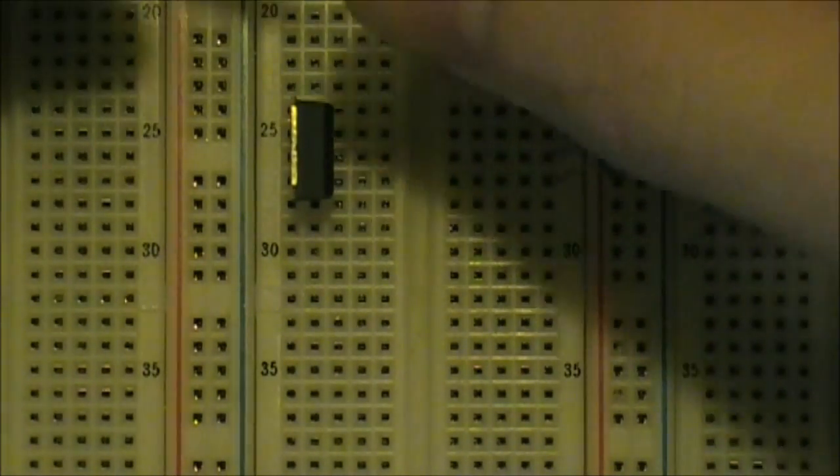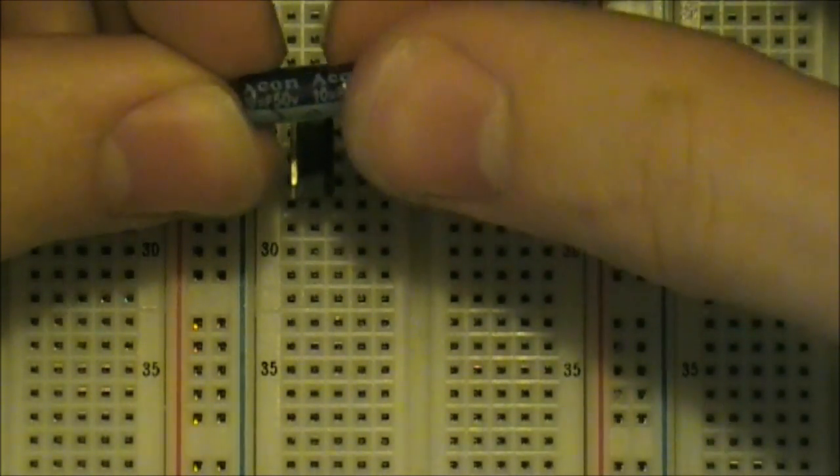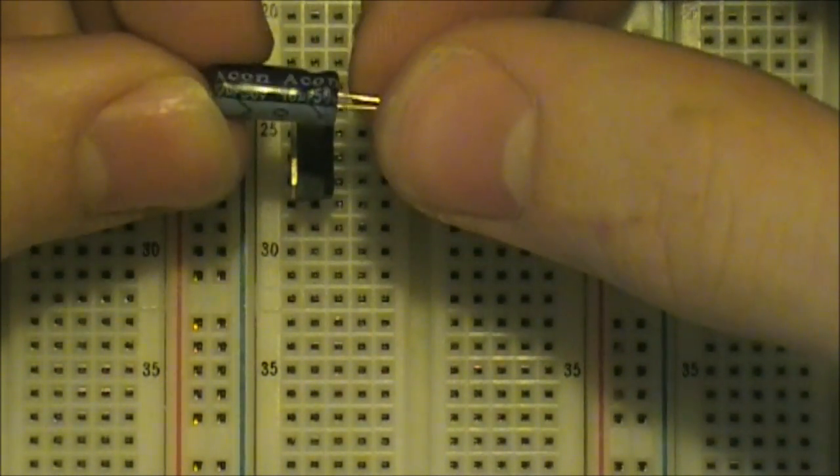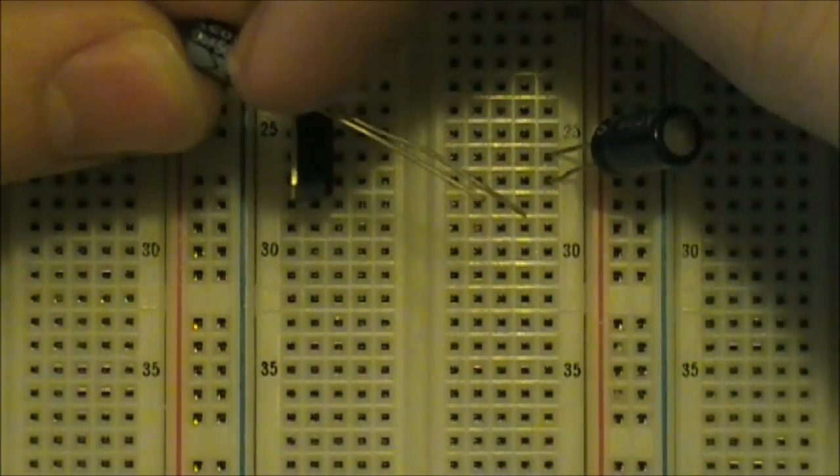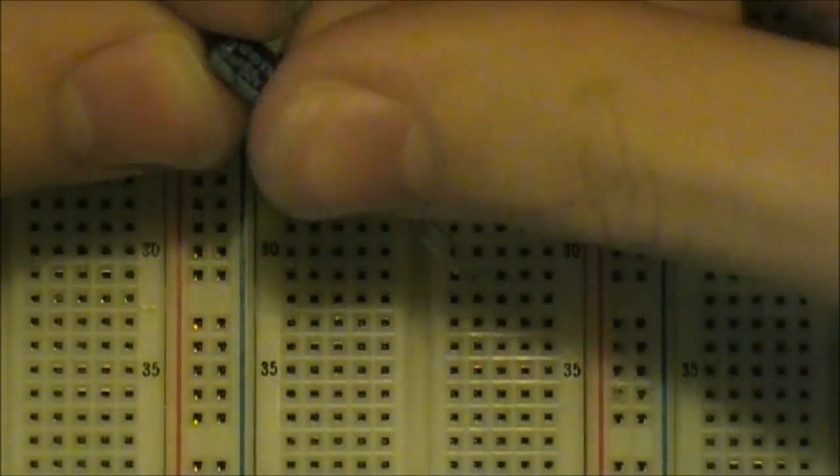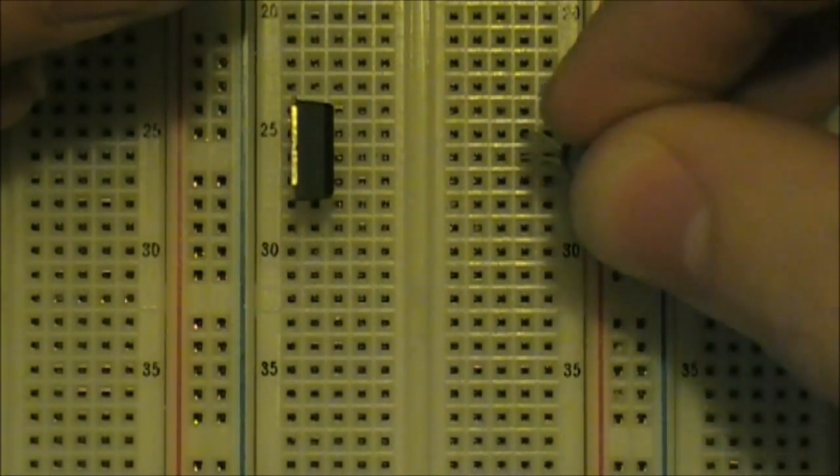Next, we need to identify the 10 microfarad capacitor. This is rated up to 50 volts. So again, we're good. And so we've got the negative side, shorter lead, that goes in right there.